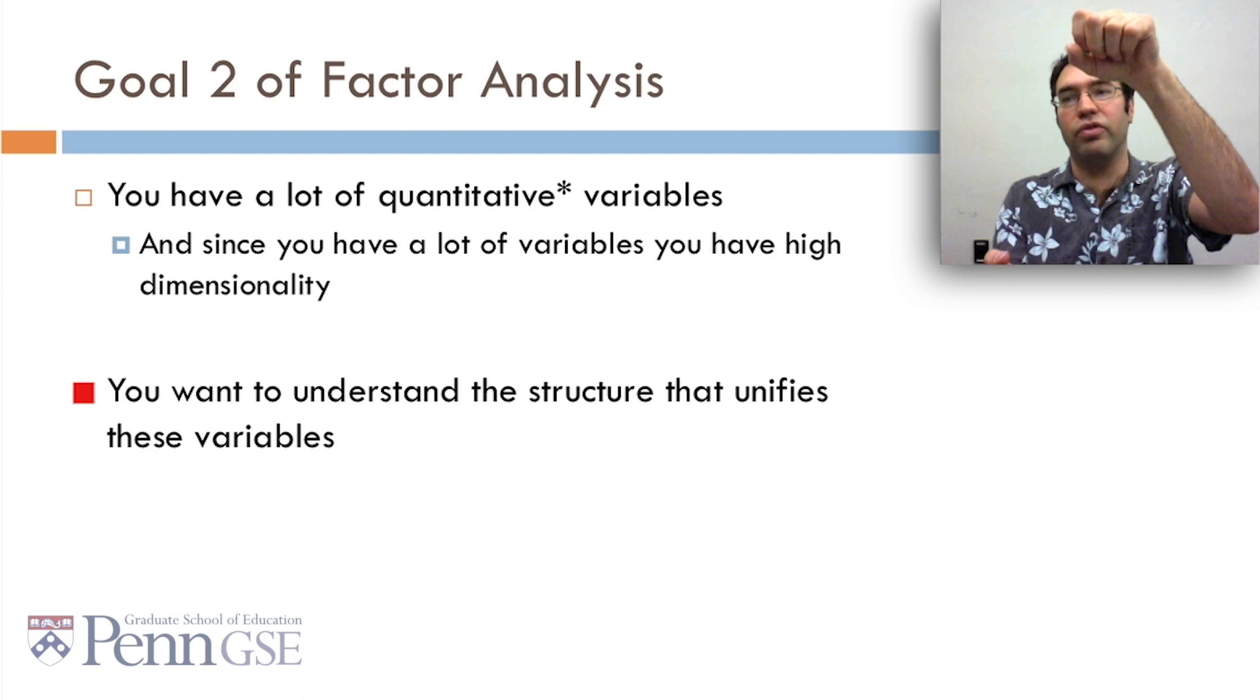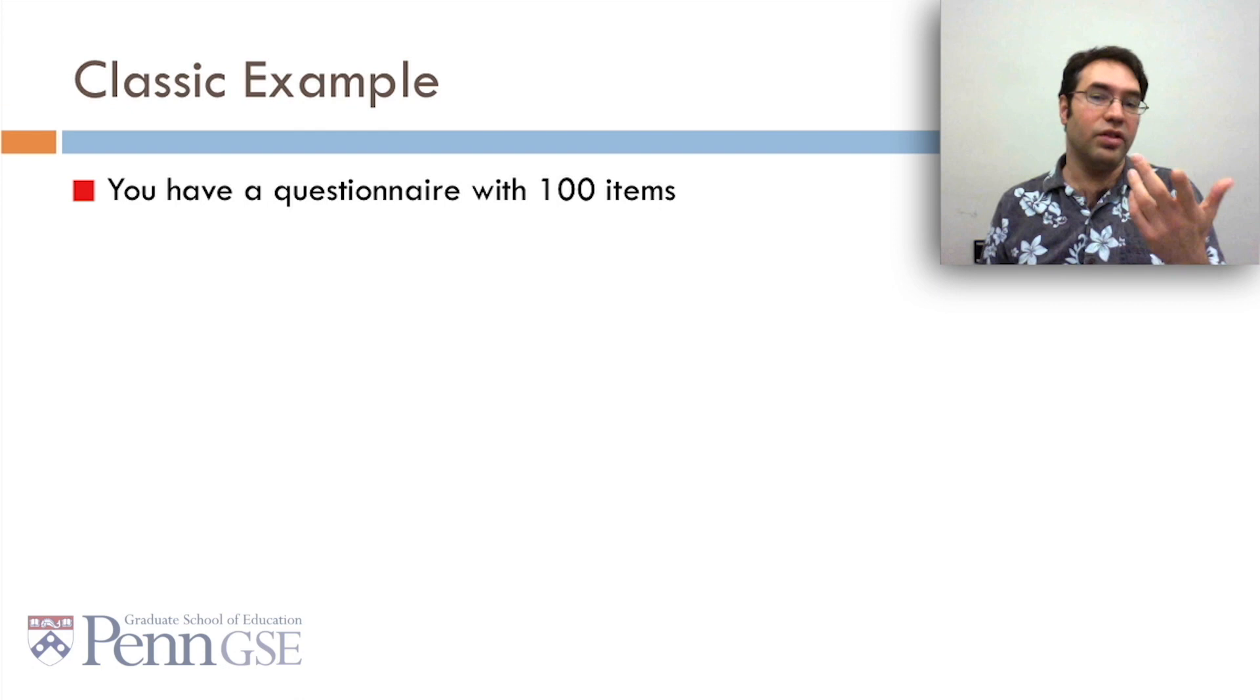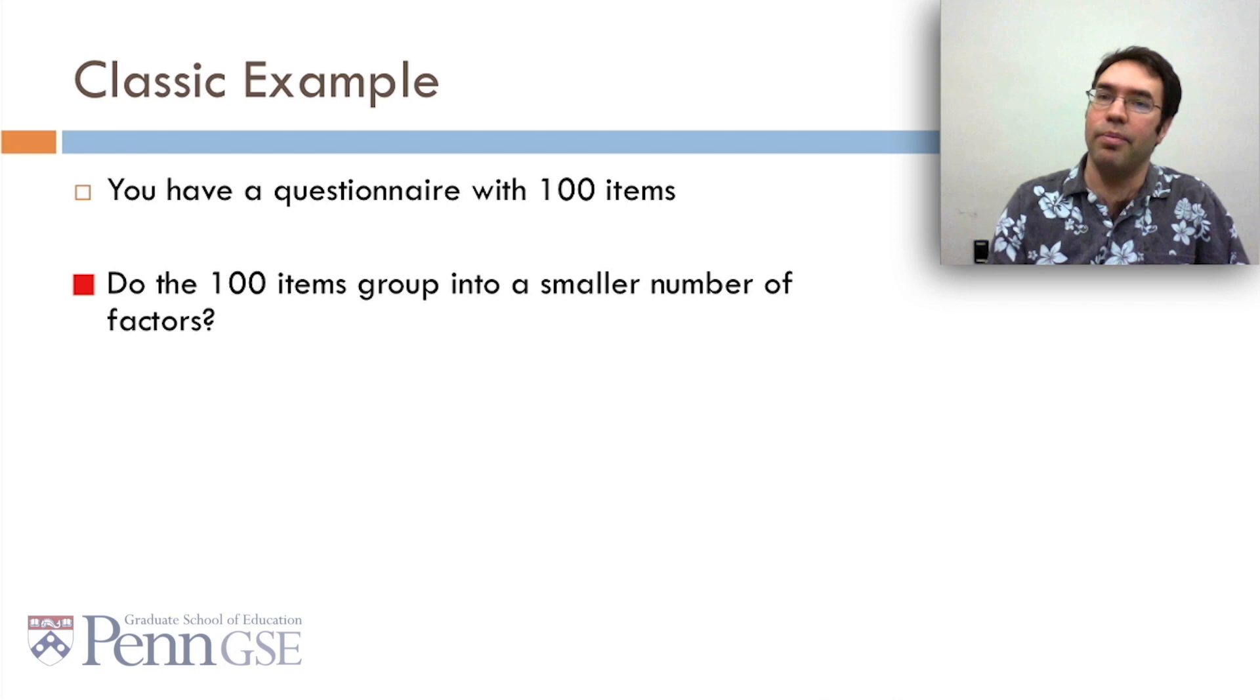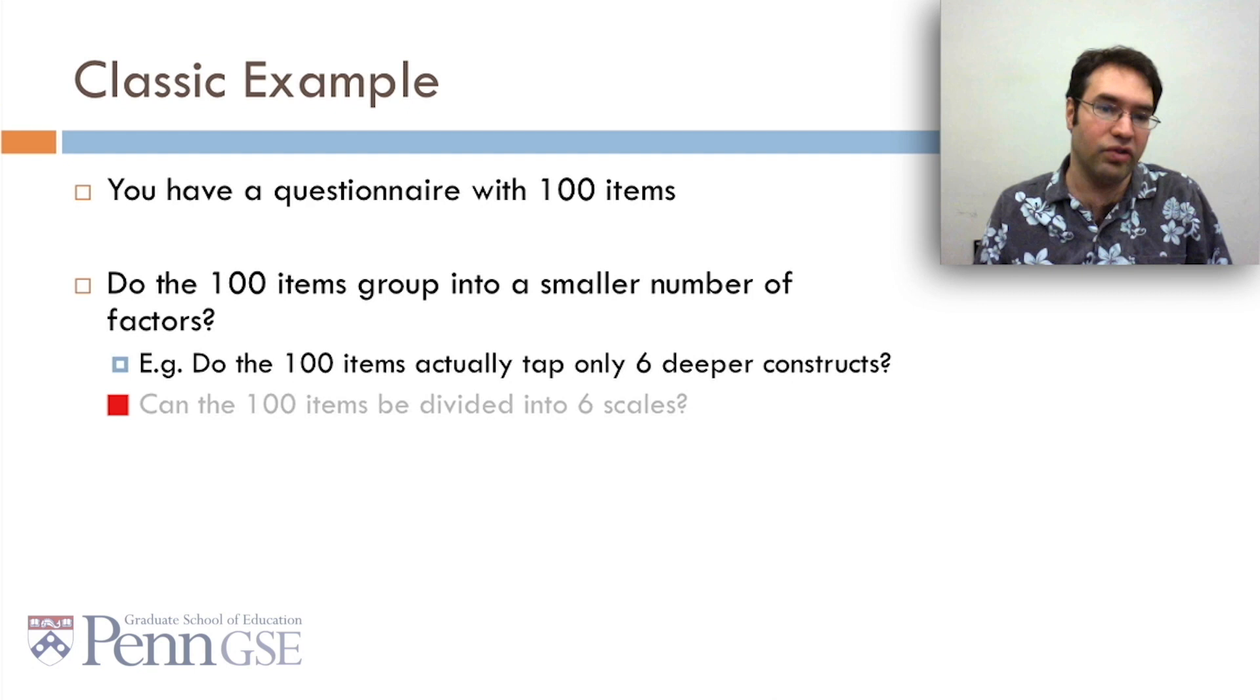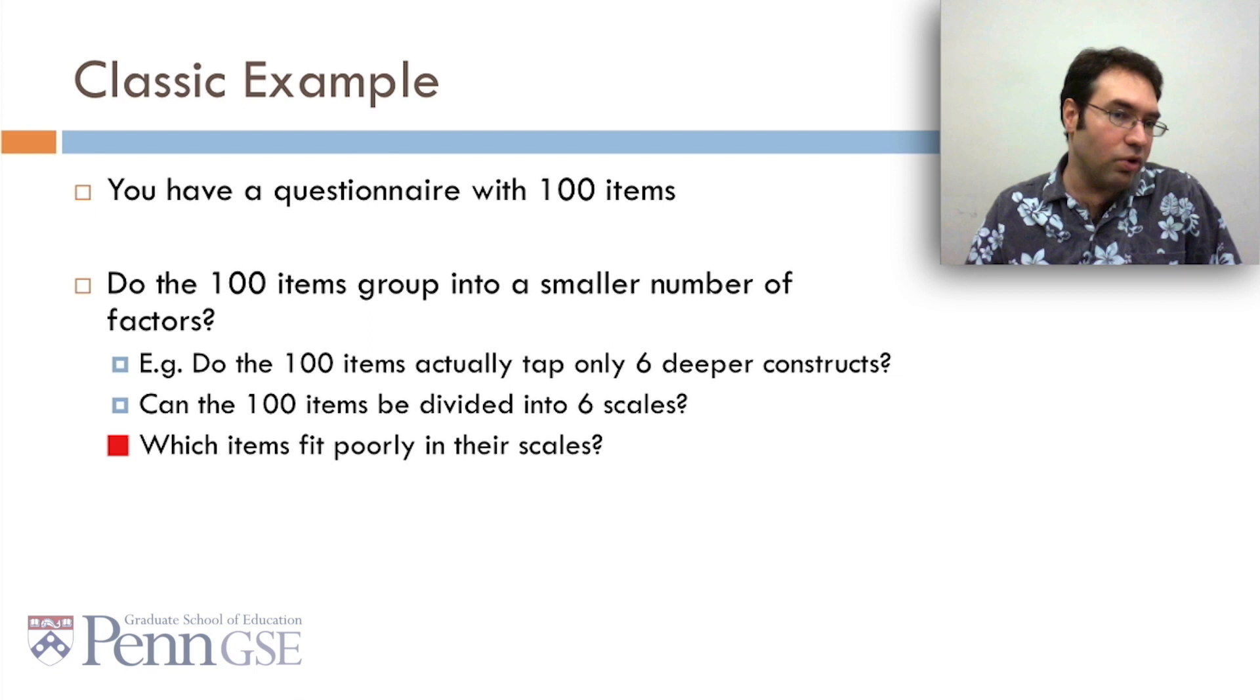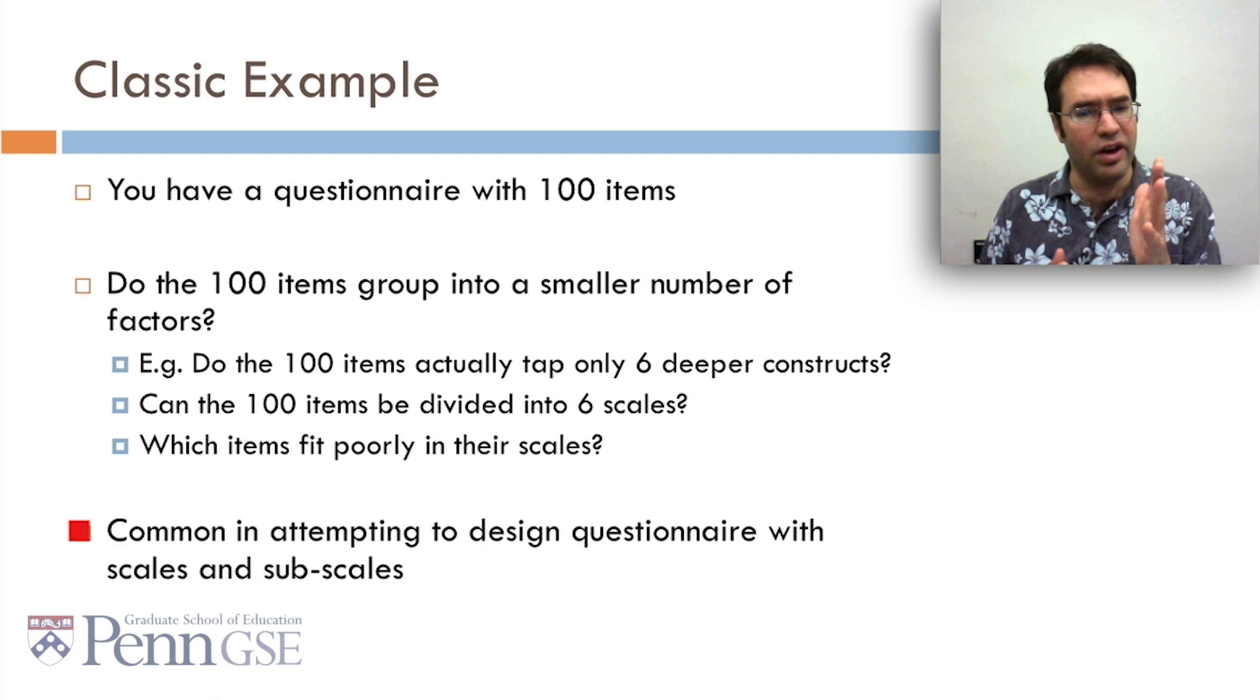So let's talk about a couple examples of how you might use factor analysis in educational data. The classic example, the one where factor analysis came from 90 years ago, is that you have a questionnaire with 100 items. And you want to say, do the 100 items group into a smaller number of factors? For example, you have a test with 100 items, and you want to say, are there actually six topics on this test? Do the 100 items actually tap only six deeper constructs? Can the 100 items be divided into six scales? Which items fit poorly in their scales? Can we actually say, of these 100 items, we have six scales, but these three items really are not very good. We should probably get rid of them. This is common when we're trying to design questionnaires with scales and subscales. And since we use questionnaires in education a lot, it's a very relevant educational problem.